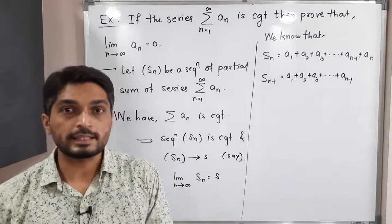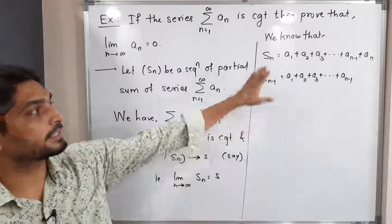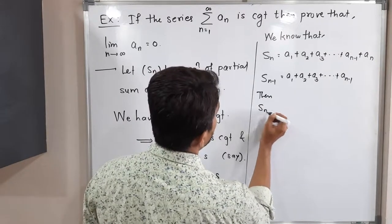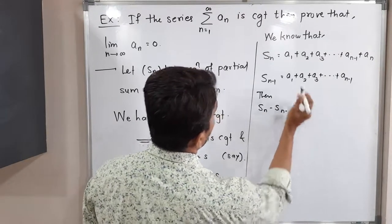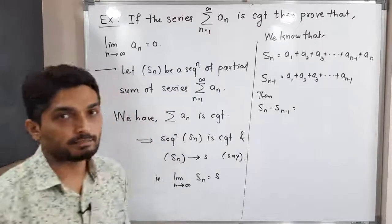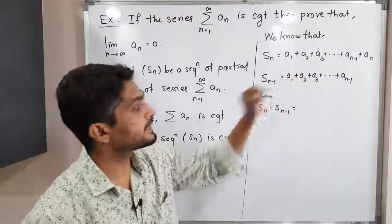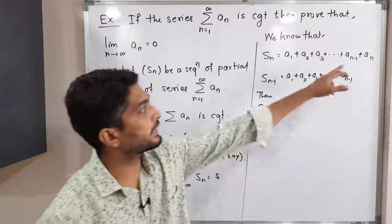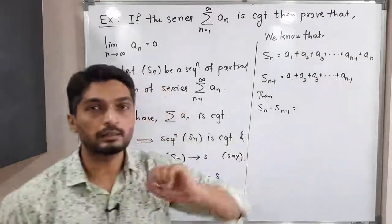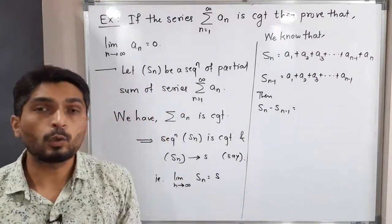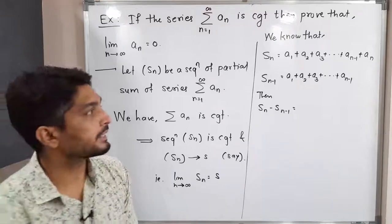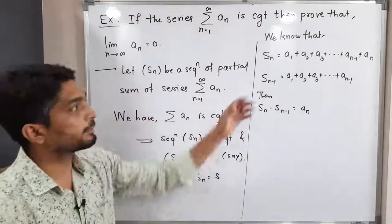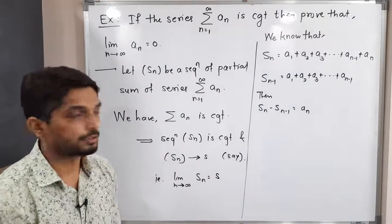Let us subtract the second equation from the first. We get S_n minus S_{n-1}. If you subtract: a_1 minus a_1 cancels, a_2 minus a_2 cancels, a_3 minus a_3 cancels, and similarly a_{n-1} minus a_{n-1} cancels. Only one term remains — that is a_n. So S_n minus S_{n-1} equals a_n; all remaining terms cancel each other.